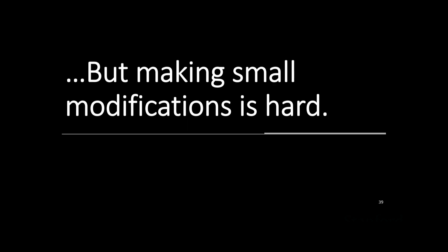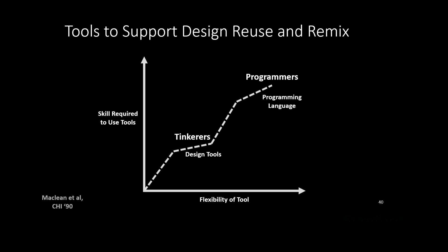Unfortunately, making those small modifications is still really hard and we need better design tools. One approach to amplifying expertise and supporting remodeling is to think about how we share and reuse code more effectively, drawing on end-user programming literature. We consider the skill required versus the flexibility provided: at the top are programming languages with high flexibility but complexity; programmers can share those with tinkers who can change parameters; and tinkers can share results with a wider population that has no flexibility but can still use them.